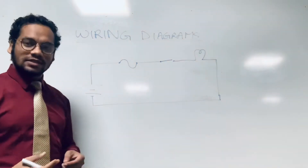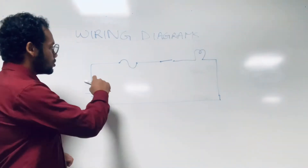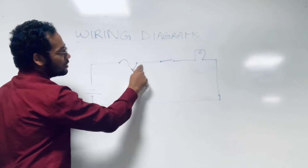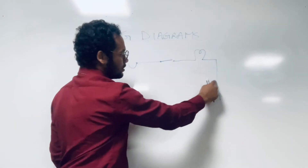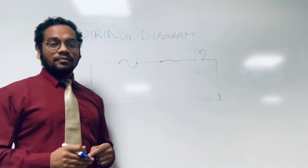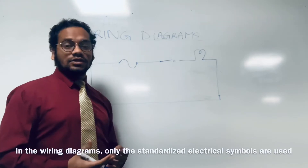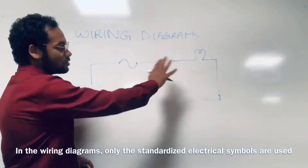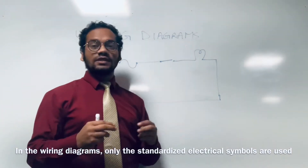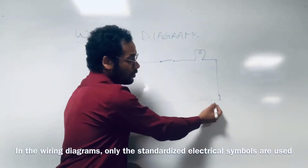How do we interpret this wiring diagram? A wiring diagram provides you the location of wires. As in this wiring diagram you can see wire is here, here, here, here, and here. So we can say that a wiring diagram indicates the position, interconnections, or locations of wires. In some wiring diagrams, even the specification of the wire or cable used can be written on the wiring diagram itself.